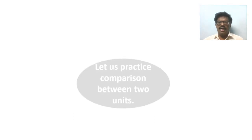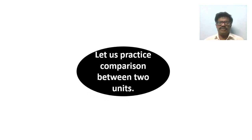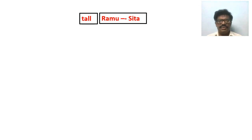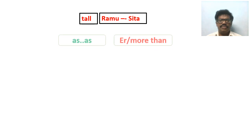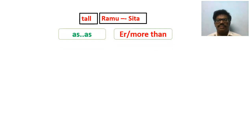Now let us see how to practice comparison between two units. Here the adjective 'tall' is taken to compare two units: Ramu and Seta. Since we have taken only two units, we can write only two types of sentences — positive degree sentences and comparative degree sentences. We cannot write superlative degree sentences here. We compare using the expressions 'as...as' and 'than' or 'more than'. 'As...as' is used for positive degree; 'than' or 'more than' is used for comparative degree.